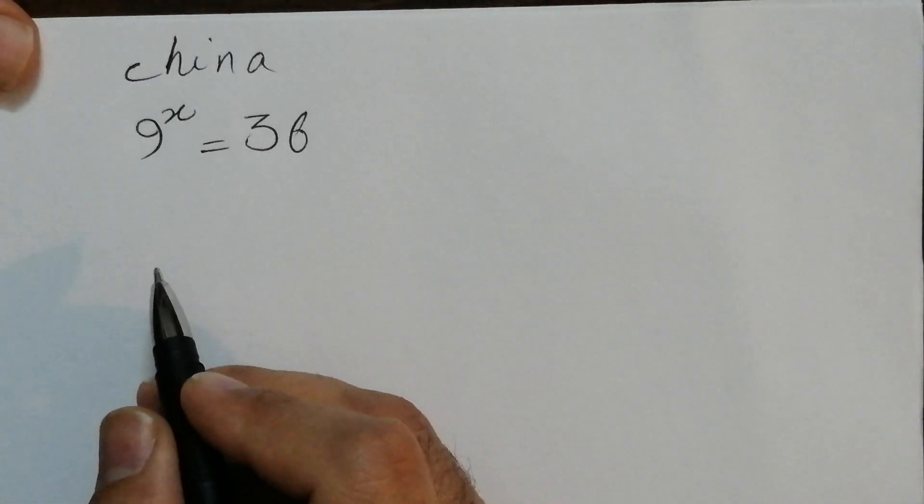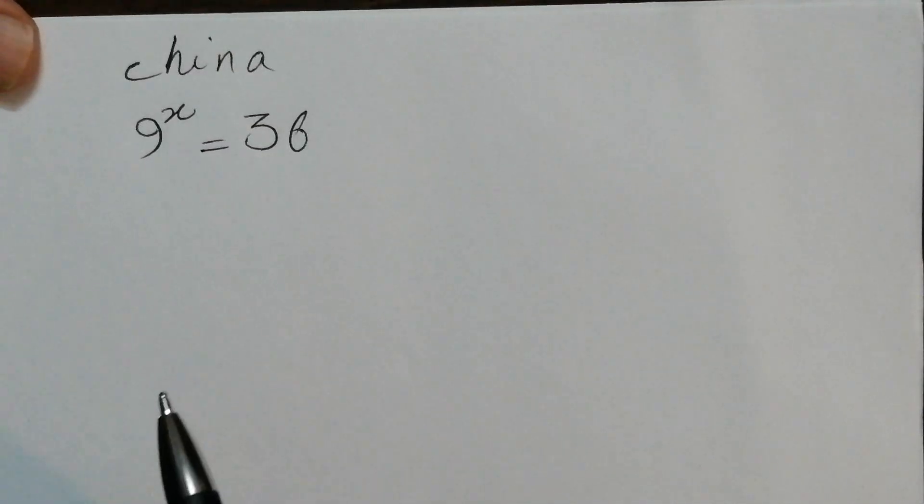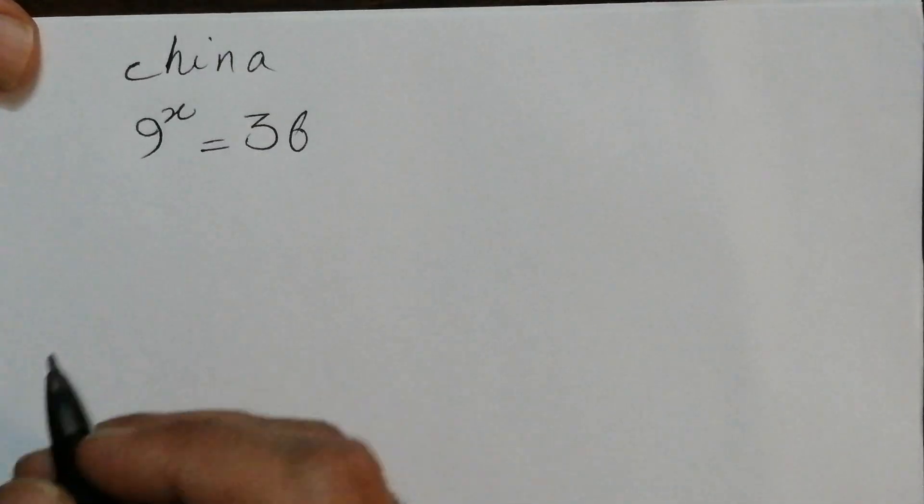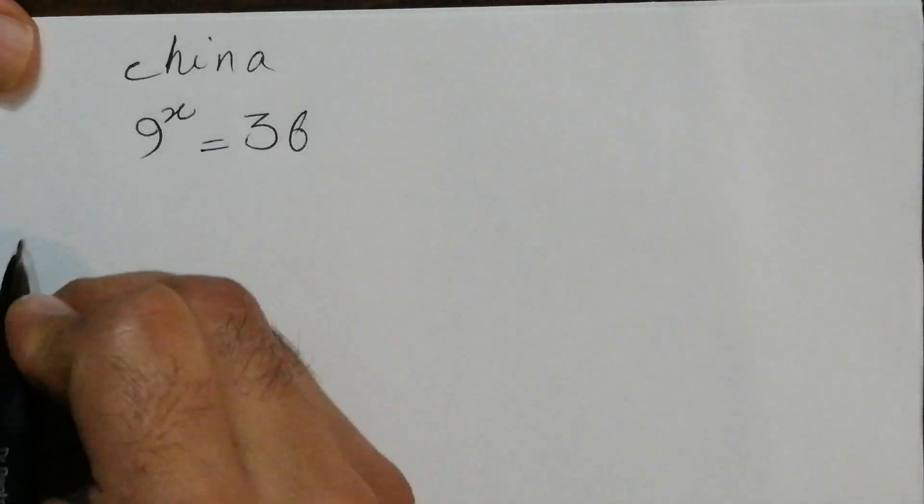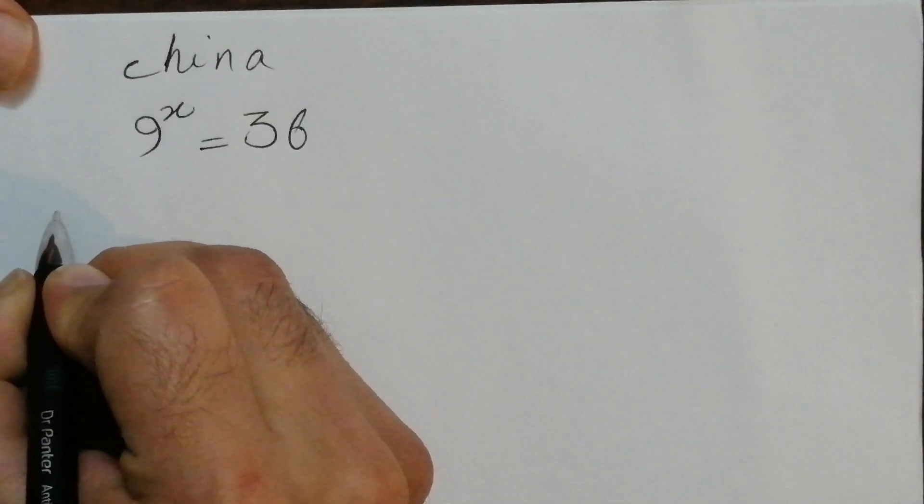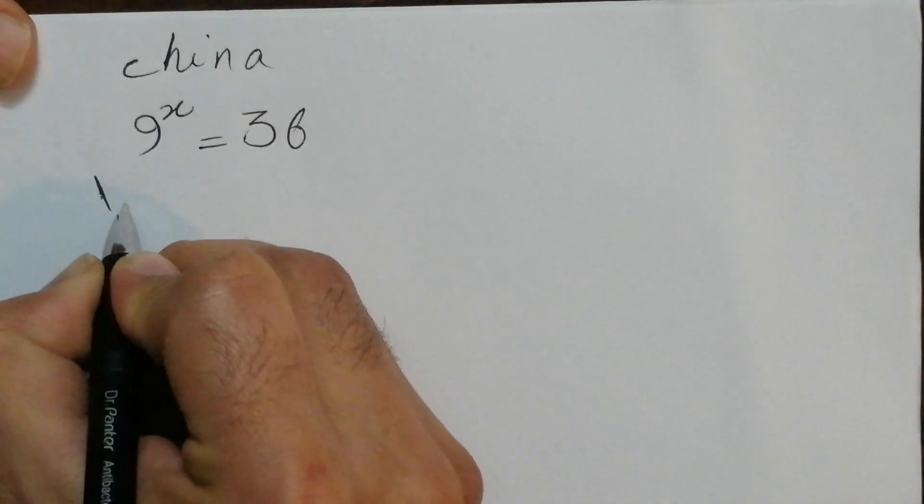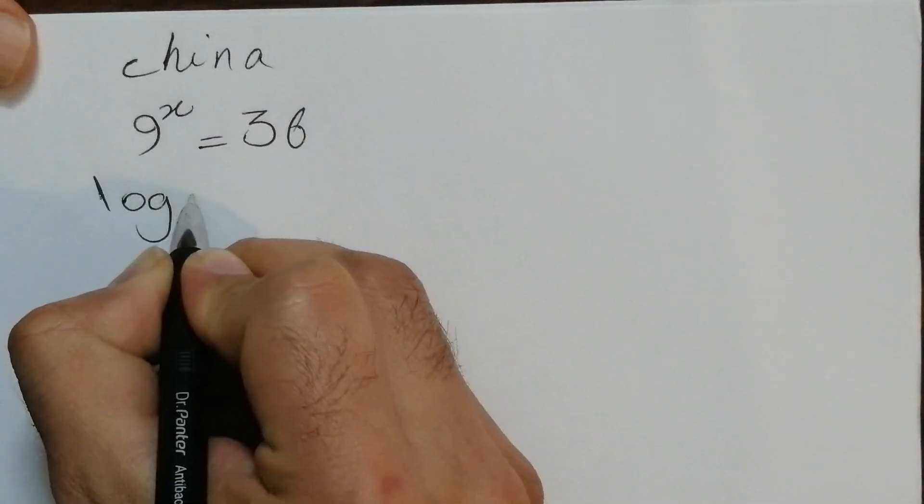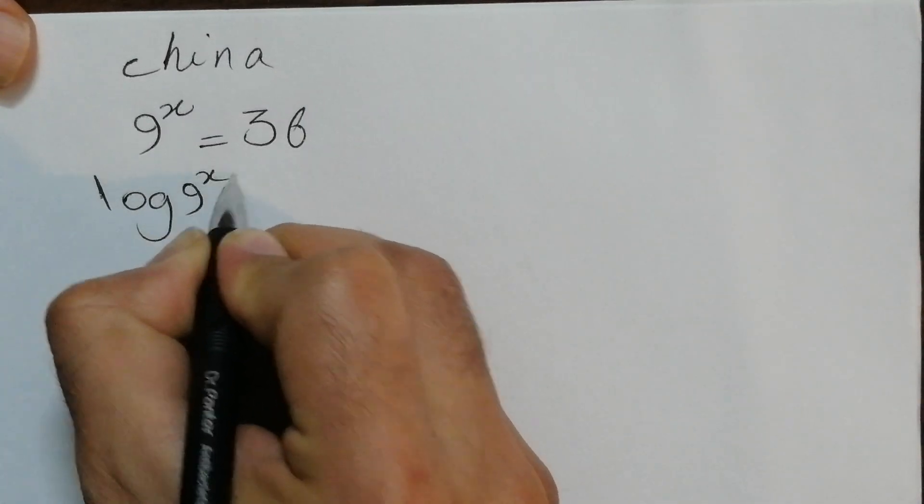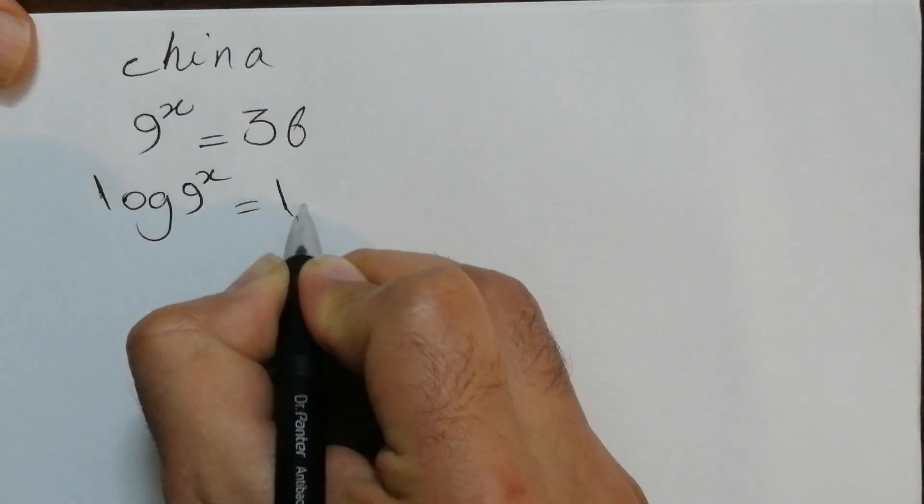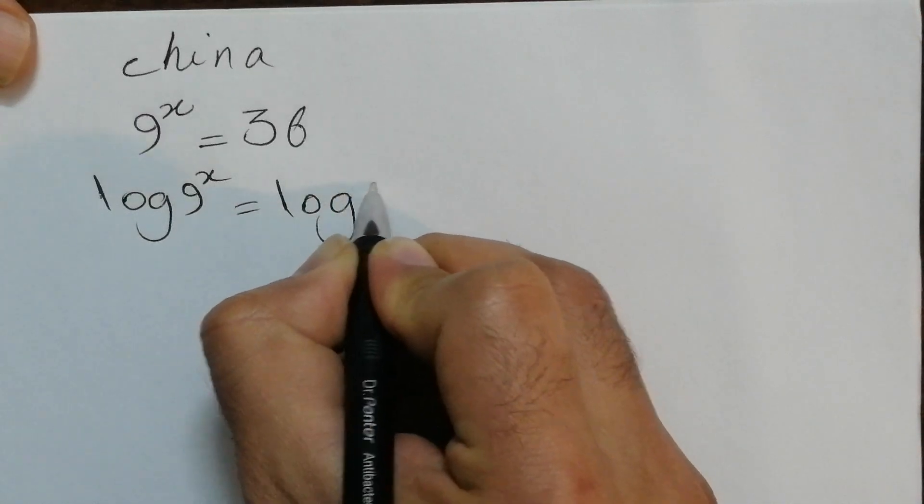The first approach to this type of problem is logarithm. I think here always logarithm is your friend. So we take the logarithm of both sides. So log 9 to the power of x equals log 36.